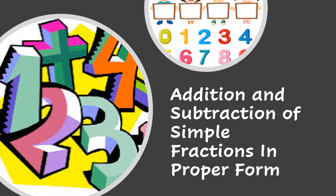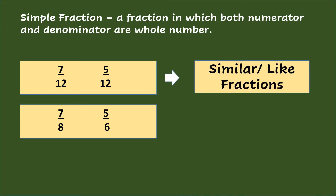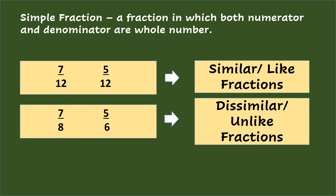Addition and Subtraction of Simple Fractions in Proper Form. A simple fraction is a fraction in which both numerator and denominator are whole numbers. For example, 7/12, 5/12, 7/8, and 5/6. 7/12 and 5/12 are called Similar or Like Fractions — fractions whose denominators are the same. Meanwhile, 7/8 and 5/6 are called Dissimilar or Unlike Fractions — fractions whose denominators are different.